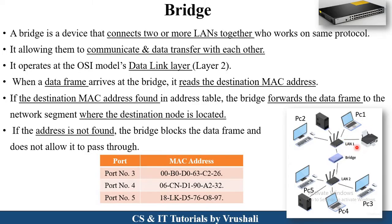Suppose PC one in LAN one wants to send information to PC five in LAN two. PC one sends information to the bridge. The bridge checks the MAC address in the lookup table to find which device the information should go to. It finds PC five's MAC address and sends the information directly to PC five. If the MAC address is not found, the information is not sent. Unlike a hub which broadcasts to all devices, the bridge sends information from the accurate source to the accurate destination. Bridge works on the second layer of the OSI model, that is the data link layer.